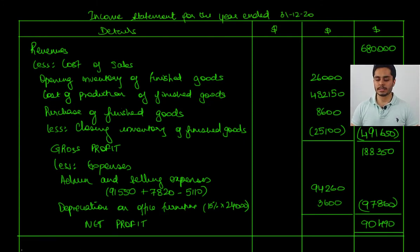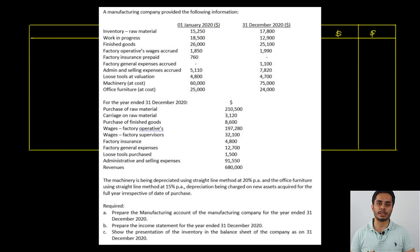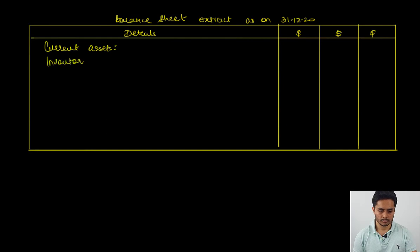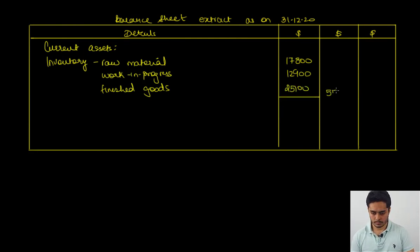The net profit for the year is 90,499. Part C requires us to show the presentation of inventory in the balance sheet. Inventory is presented in the current asset section, so this is a balance sheet extract. Under current assets inventory we present all three categories: raw material, work in progress, and finished goods, and then show the total. This completes our balance sheet extract.